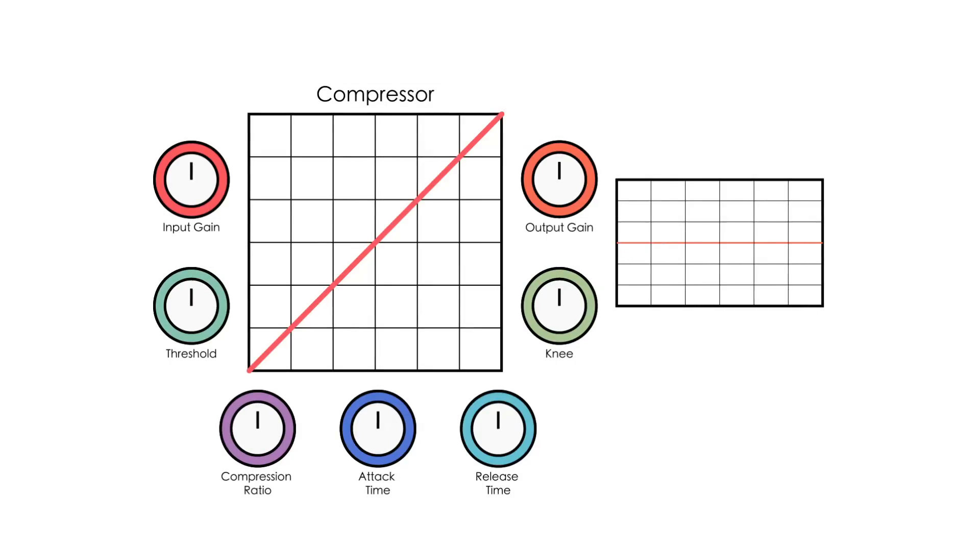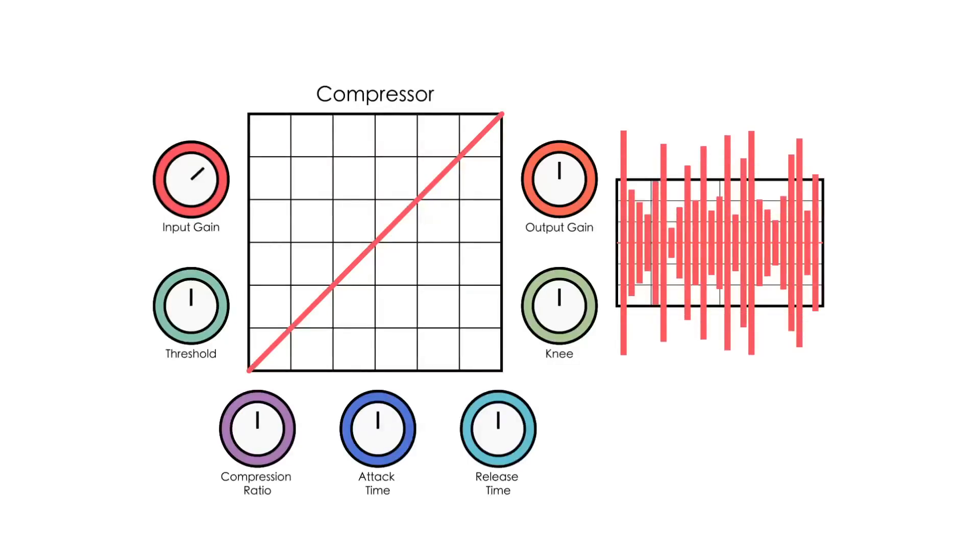Next you will see an input gain where you can adjust the level at which the signal comes into the compressor. As with any audio device you want to make sure you have a good strong signal for the compressor to function properly but not so strong that you clip.